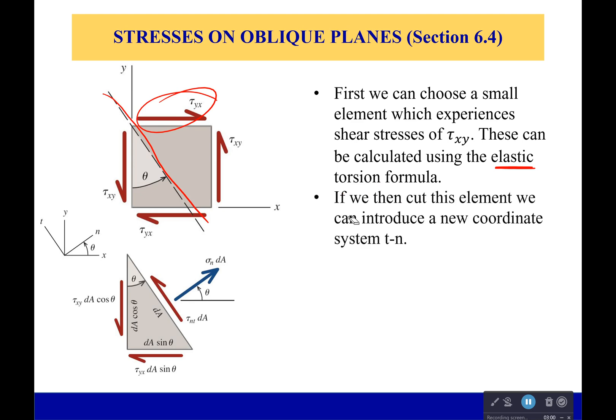So when we do that we can introduce an n-t coordinate system. We have the tangent direction which is going up the hill and the normal direction which is going out of it. And because of doing this we also introduce new stresses that have to be solved for. We're going to have a new shear stress on this tangent plane.